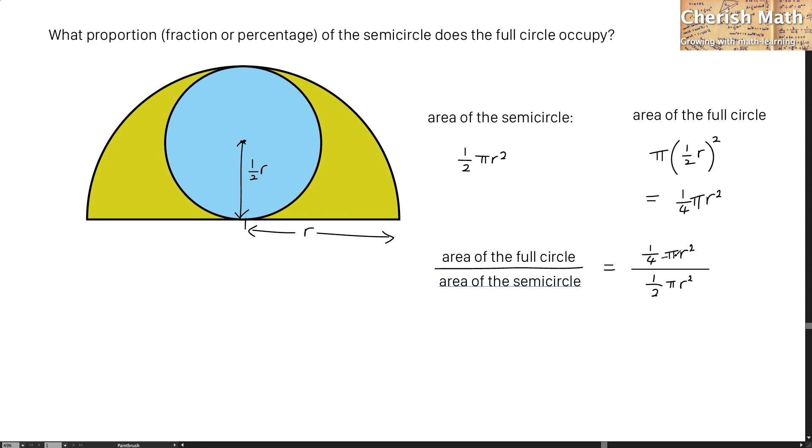Now, I'm trying to simplify it. And eventually, the answer is 1 quarter divided by 1 half, which is 1 half at last. Thank you.